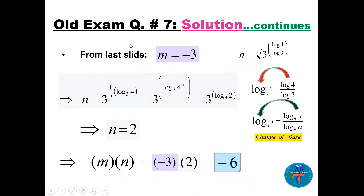For n: we have 3^(1/2 · log 4 / log 3). The division log 4 / log 3 is change of base in reverse, giving log base 3 of 4. Then 1/2 moves to the power of 4, giving log base 3 of 4^(1/2) = log base 3 of 2. So n = 3^(log base 3 of 2) = 2. Therefore m × n = −3 × 2 = −6.